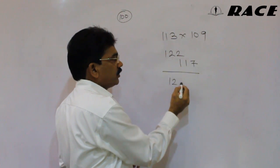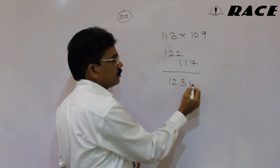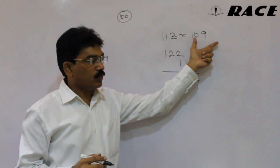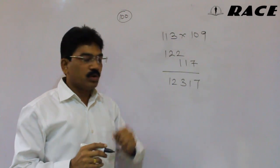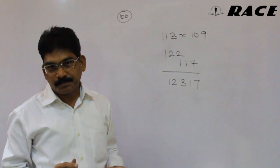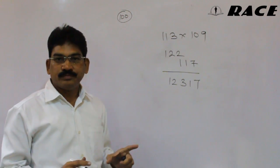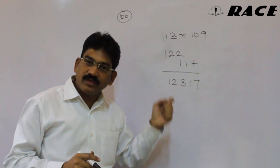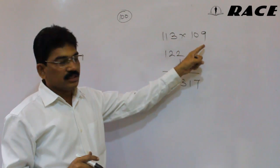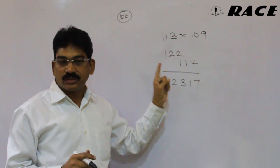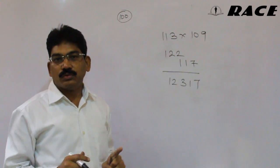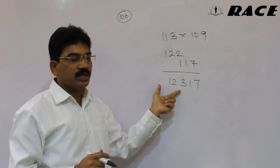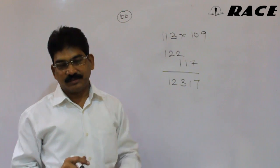So the answer is 122 plus 1 carry, giving 123, and 17 — so 12317. For these numbers near 100: if you get 2 digits in the second part, write them directly. If you get a single digit, write it as 0 followed by that digit. If you get 3 digits, carry one digit to the first part.